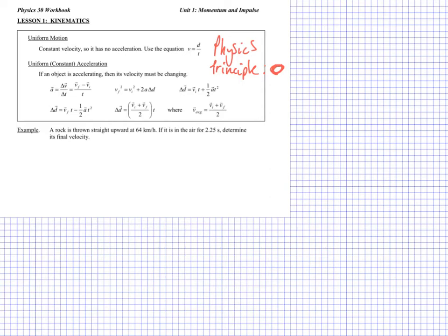This first one is to do with a rock thrown up into the air. Let's just visualize what's going on. It's a rock thrown upwards at 64 kilometers an hour. I should be getting warning signs going off already because 64 kilometers an hour is not a unit that I'm going to want to use. So I want to change this to meters per second. I'm going to do that right away.